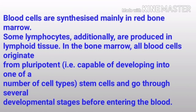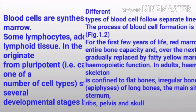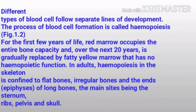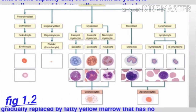Blood cells are synthesized mainly in red bone marrow. Some lymphocytes are additionally produced in lymphoid tissue. In the bone marrow, all blood cells originate from pluripotent stem cells, capable of developing into one of a number of cell types, and go through several developmental stages before entering the blood.